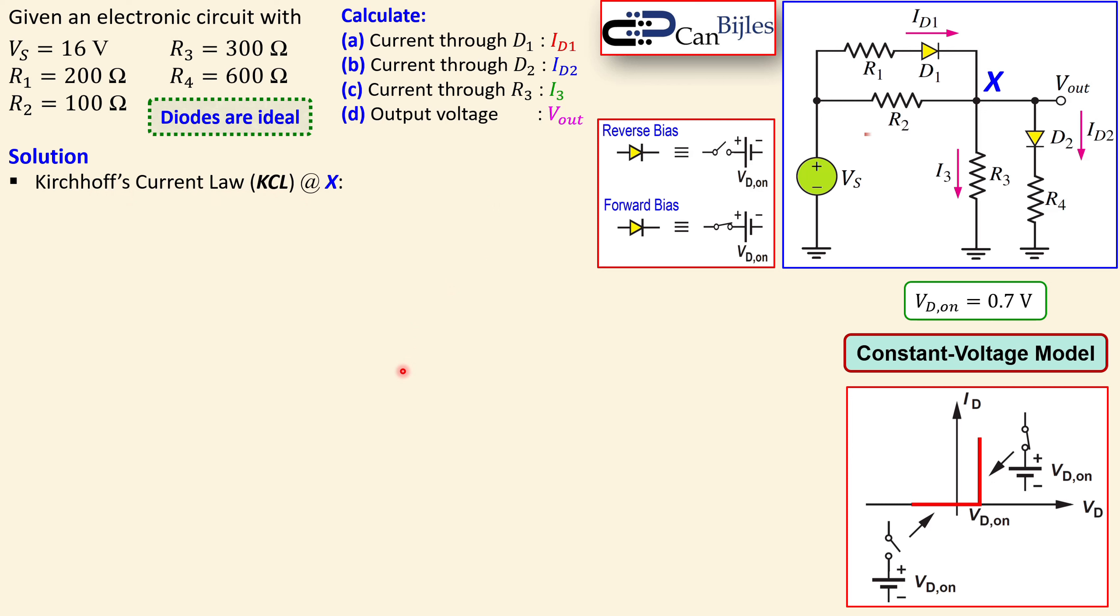I will use at the node the Kirchhoff's current law, KCL, at node X. What do I see? I see two currents coming in, I2 and ID1, and two currents are leaving: I3 and ID2. So I can say I2 plus ID1 will equal I3 plus ID2. Now if I use Ohm's law for each branch in the circuit, for ID1 and I2 and also I3 and ID2.